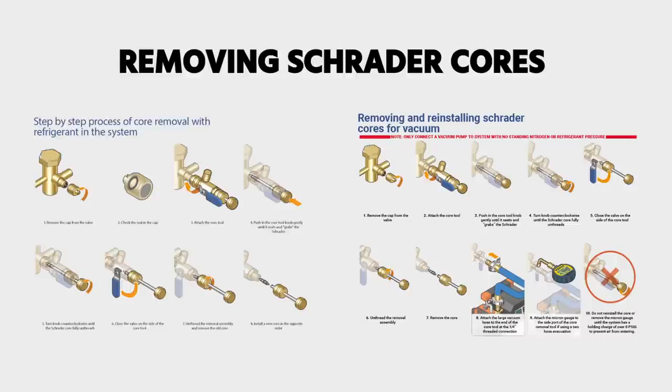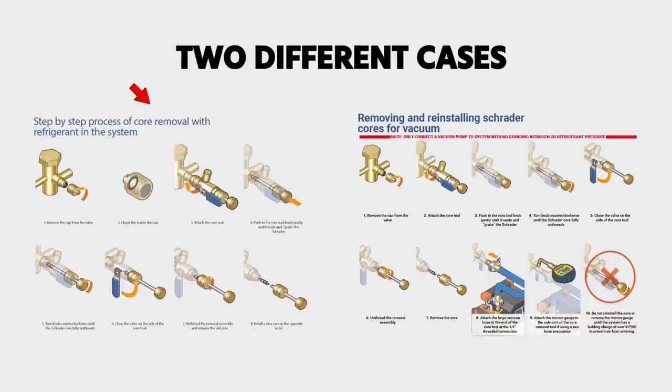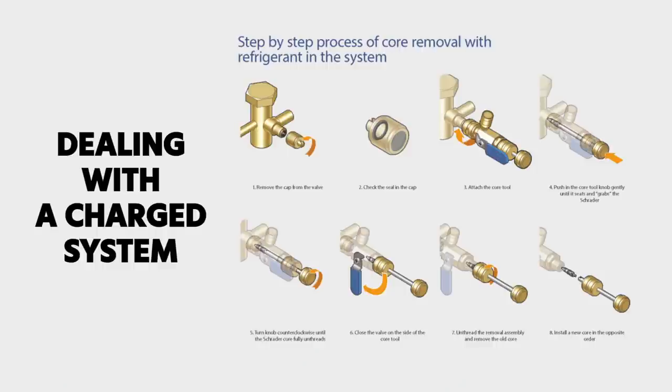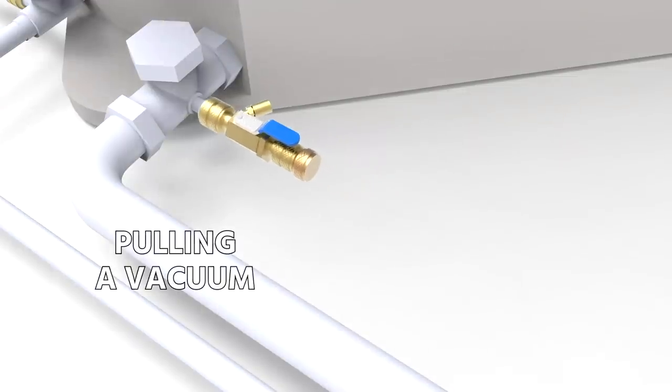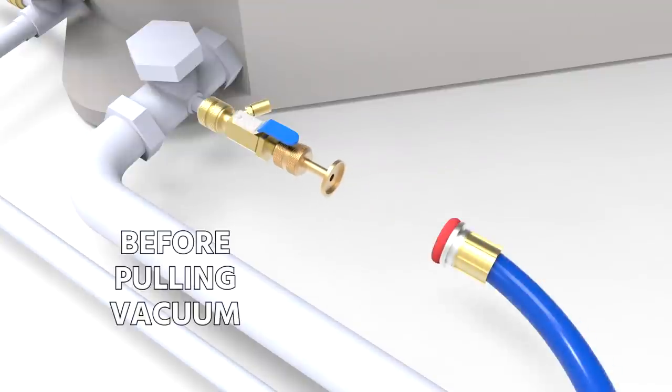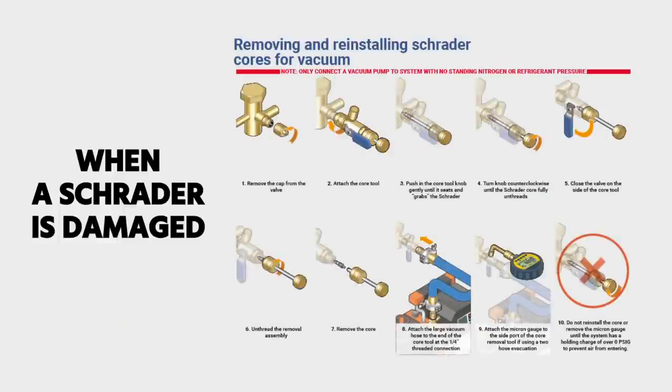In this video, I want to talk specifically about removing Schrader cores. There are two different cases when we want to do this. One is when we're dealing with a charged system and we want to pull the Schrader out under pressure. The other is when we want to do it when we're going to pull a vacuum. We always recommend removing all Schraders when you're going to pull a vacuum, when you're recovering, or when a Schrader is damaged.